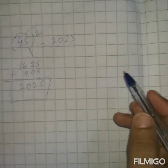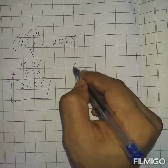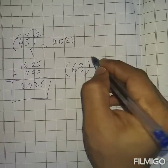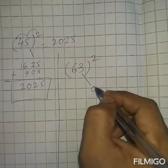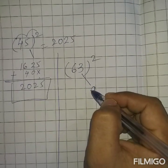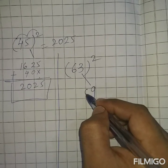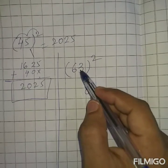Now let us go for one more example: 63. Square of 63. Square of 3 is 9. Now this is single digit, so put 0. So 09. Square of 6 is 36.